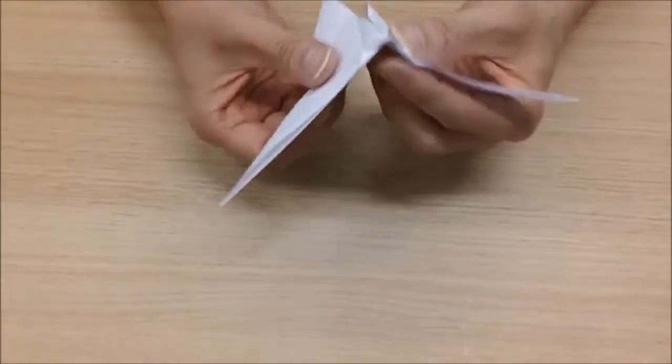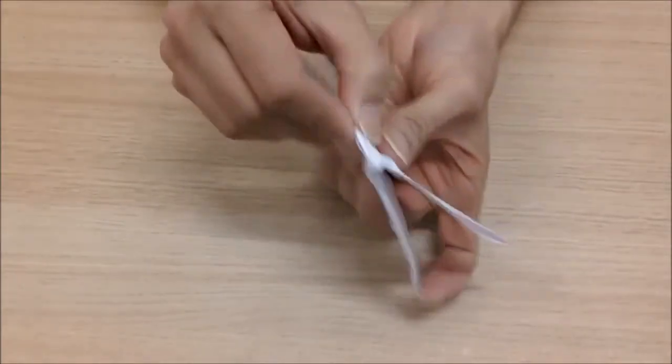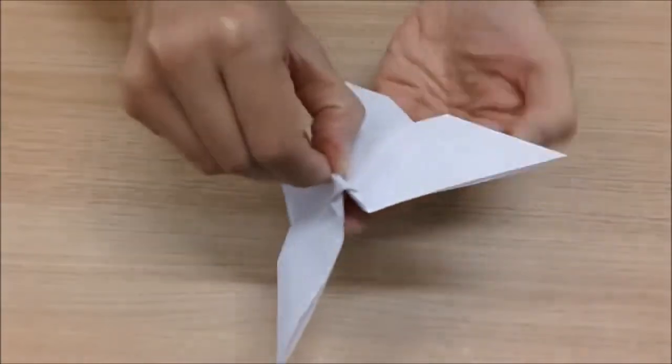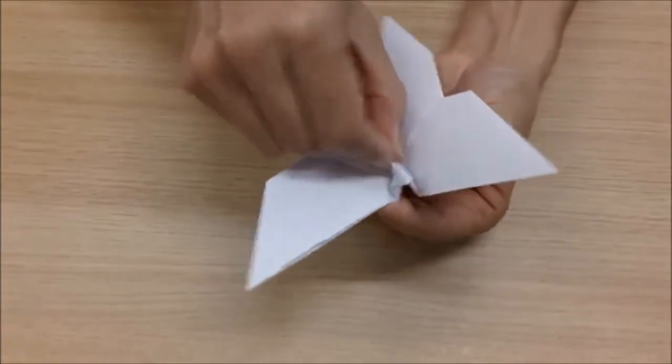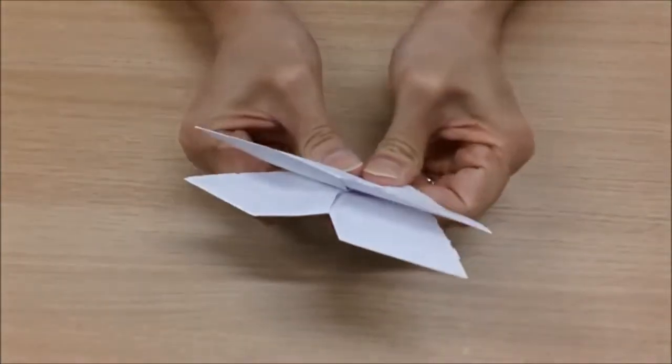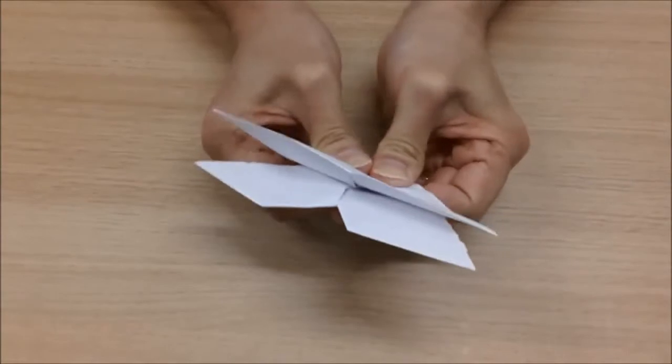Now, we can fold our butterfly in half. And where we've made our crease, we fold the two wings forward. Like so. Press down very, very firmly.